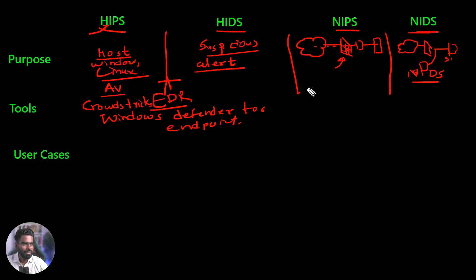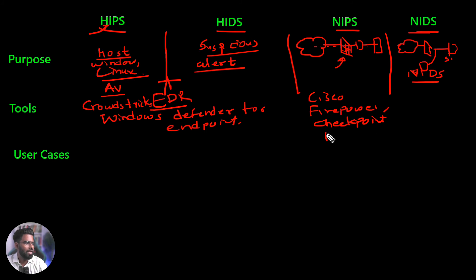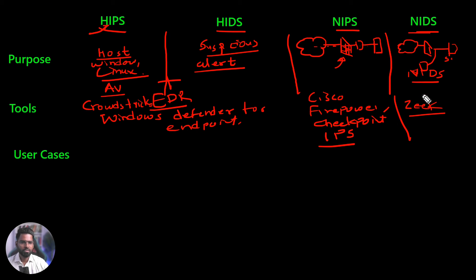In the real world, the popular tools for NIPS include Cisco Firepower and Checkpoint IPS. For NIDS activity, you can use the same software, but there are many other tools available. You can use Zeek for the same purpose. You can analyze all the real-time traffic with Tripwire as well, which is popular for file integrity but can also detect other malicious activity.